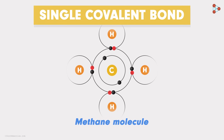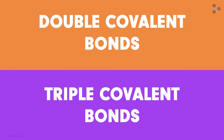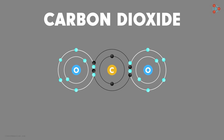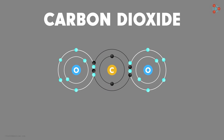Now let's talk about the double and triple covalent bonds formed by carbon. To understand this, we take a simple example of the compound carbon dioxide. Can you draw the typical molecular structure of carbon dioxide? It appears somewhat like this — two oxygen atoms bonded with one carbon atom.